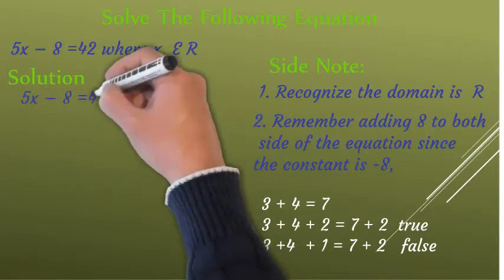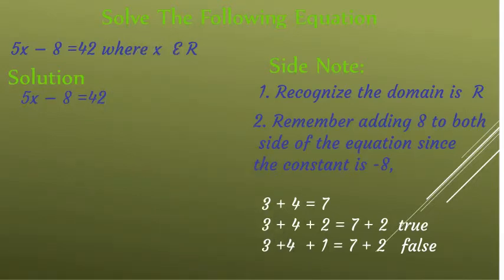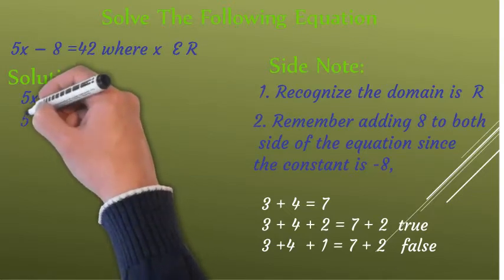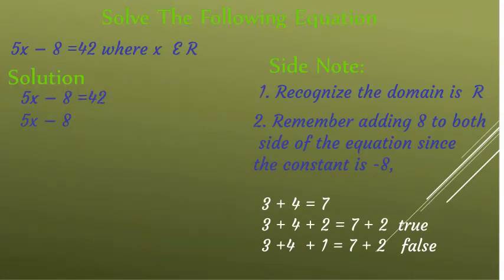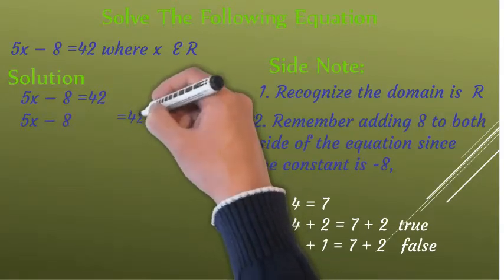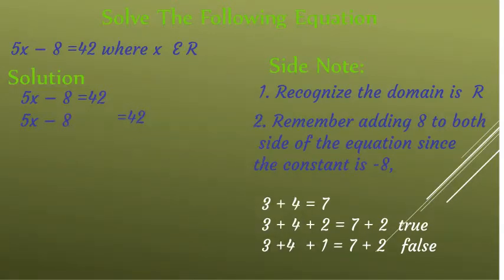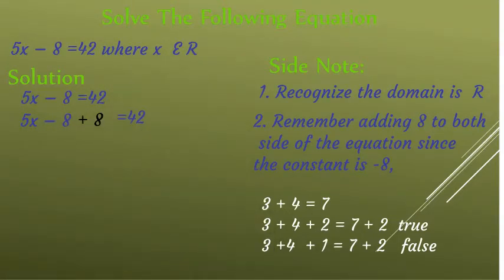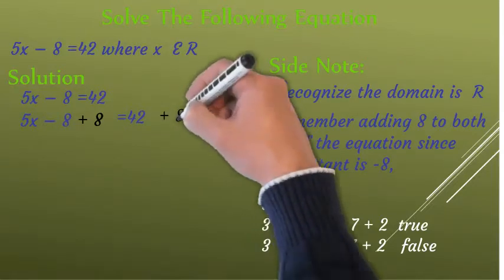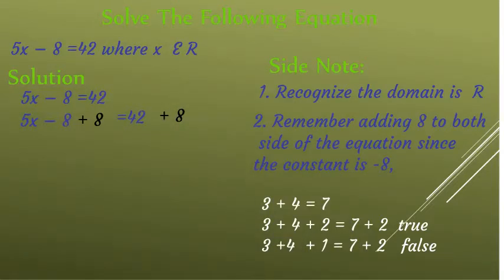With that, let's start solving the equation. Five x minus eight is equal to 42 — that's the given. Next, let's add eight to both sides of the equation: five x minus eight plus eight is equal to 42 plus eight. Notice we add the same number to both sides.